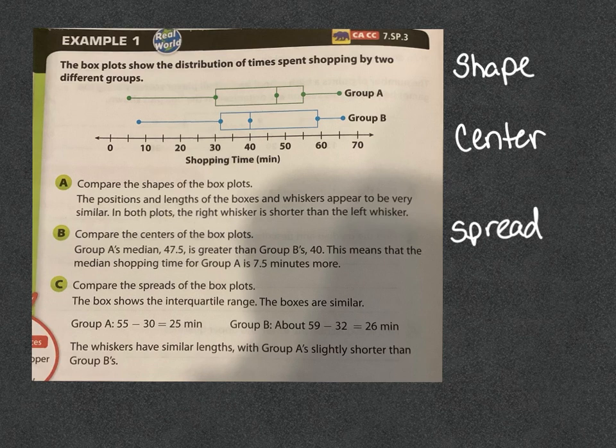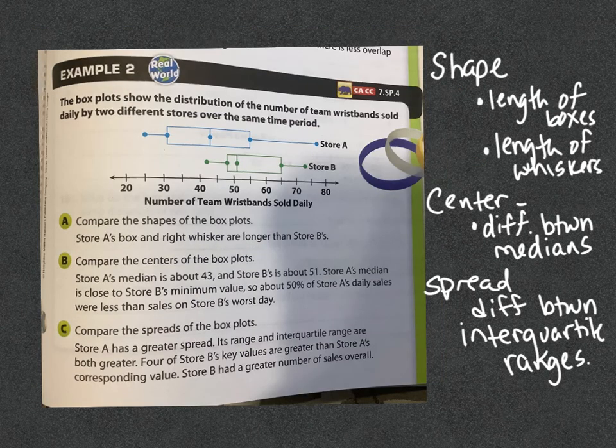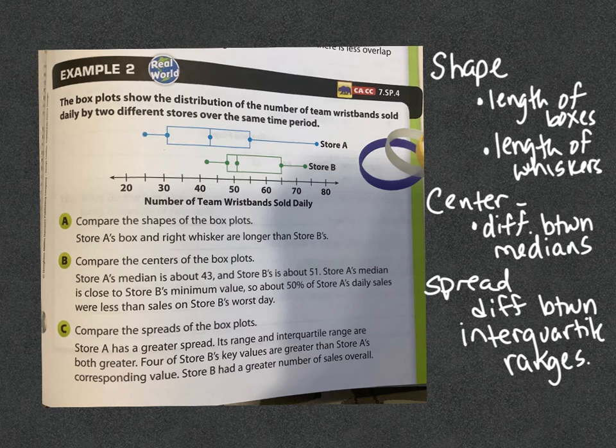You check their shape, check their center, check the spread — that's what you're doing to compare these. The last example has box plots that look a little more different. This box plot shows the distribution of the number of team wristbands sold daily by two different stores over the same time period. In store A, they sold the wristbands in this kind of configuration, and in store B, in this configuration.